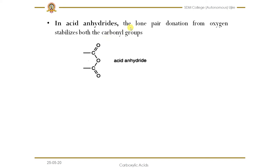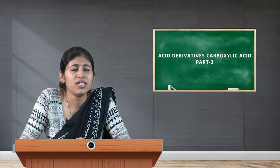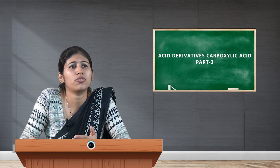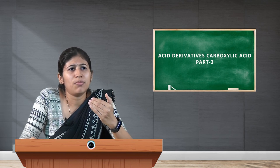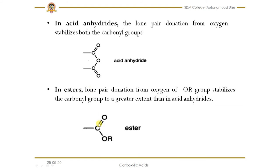In the case of acid anhydrides, the oxygen has a lone pair electron which it can donate into resonance stabilization. However, this oxygen must donate its lone pair to two carbonyl groups on both sides, which makes it once again less stable compared to esters. In the case of esters, oxygen donates its lone pair to only one carbonyl group. Since anhydrides must share lone pair donation between two carbonyl groups, anhydrides are less stable than esters.